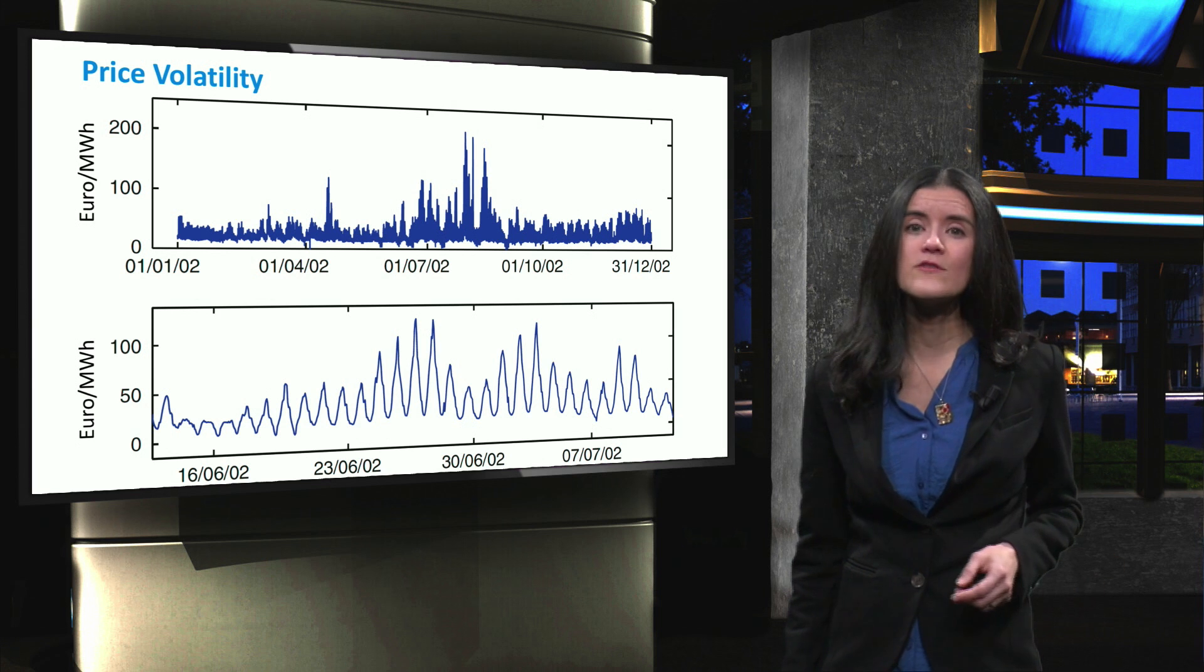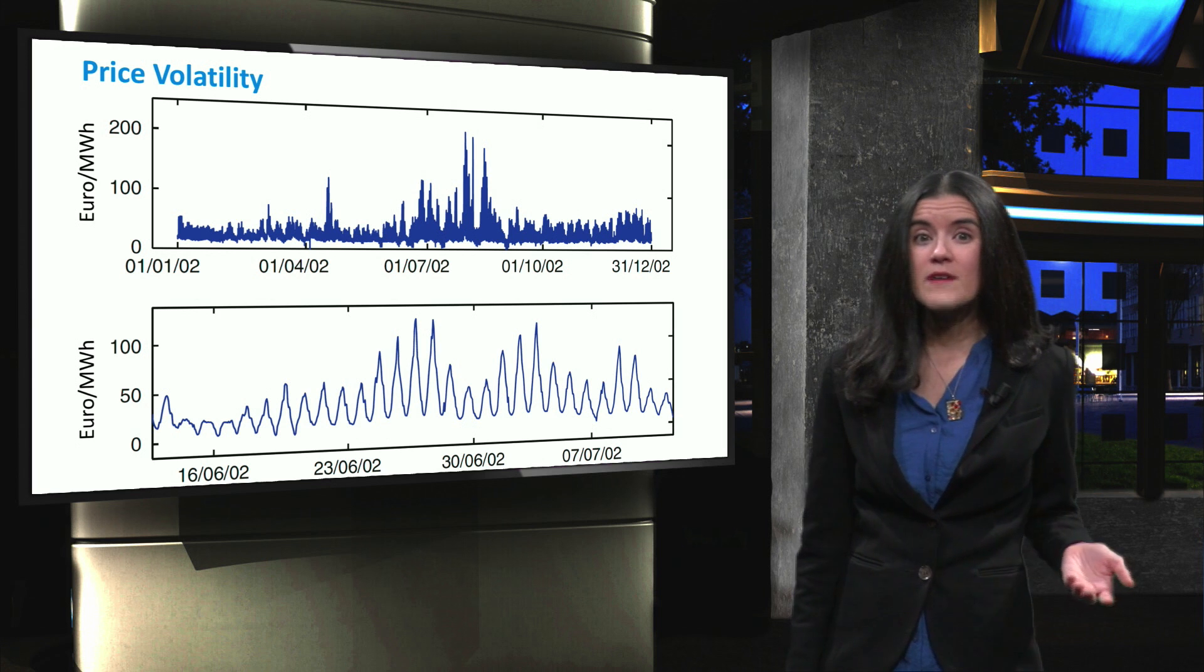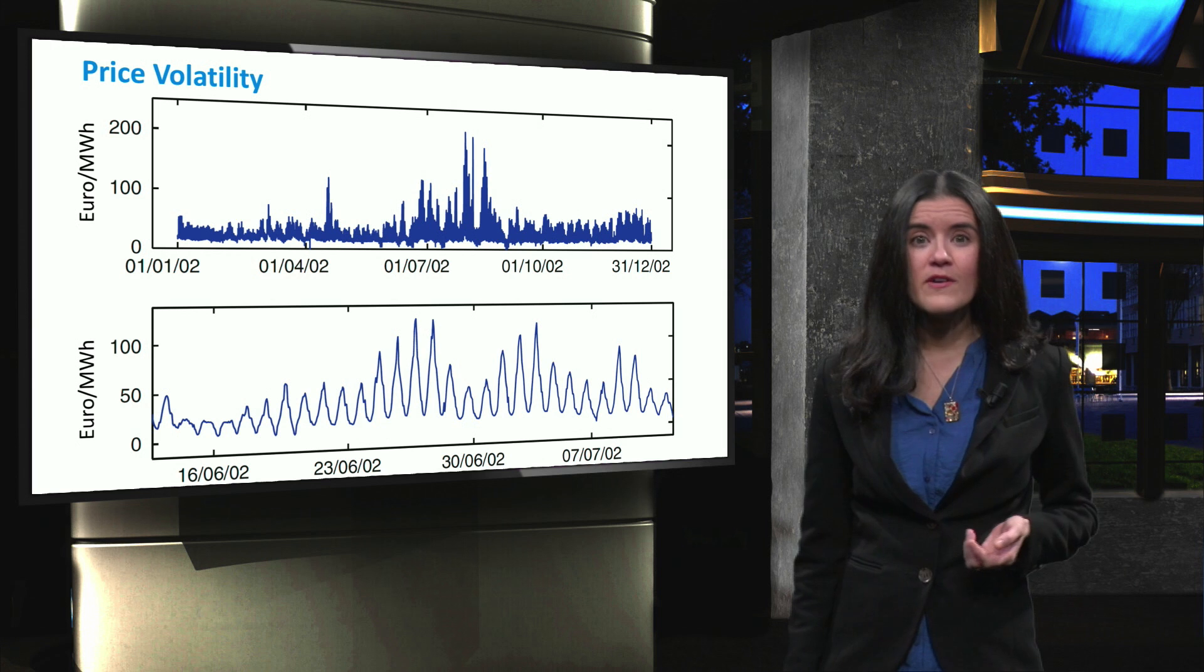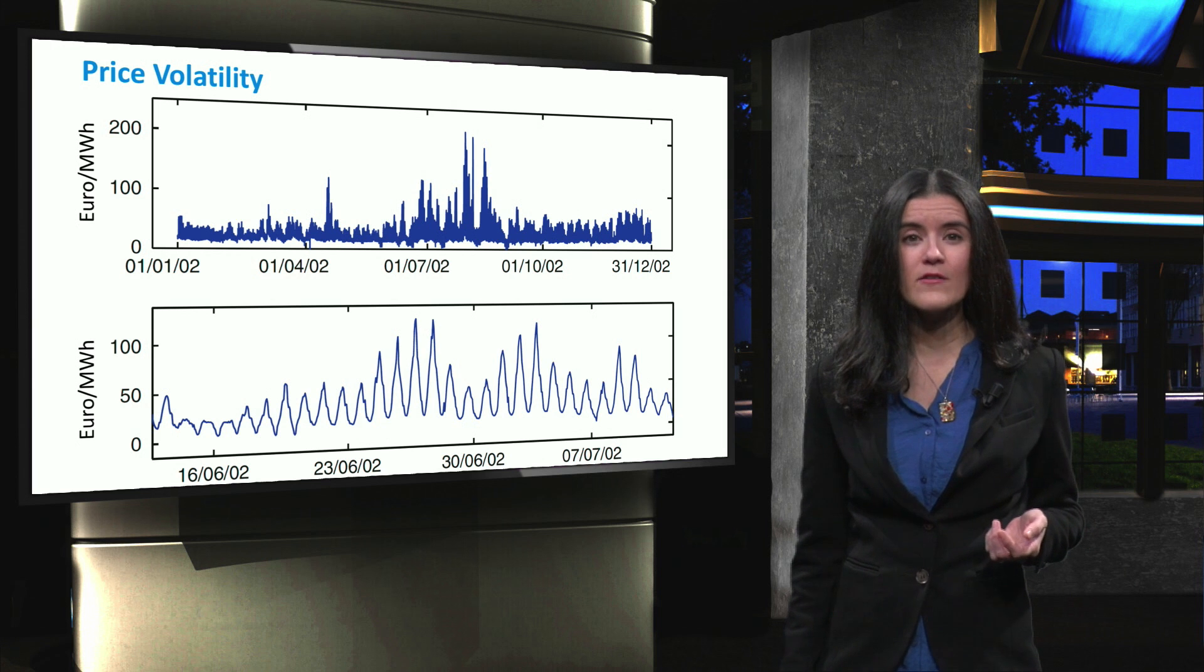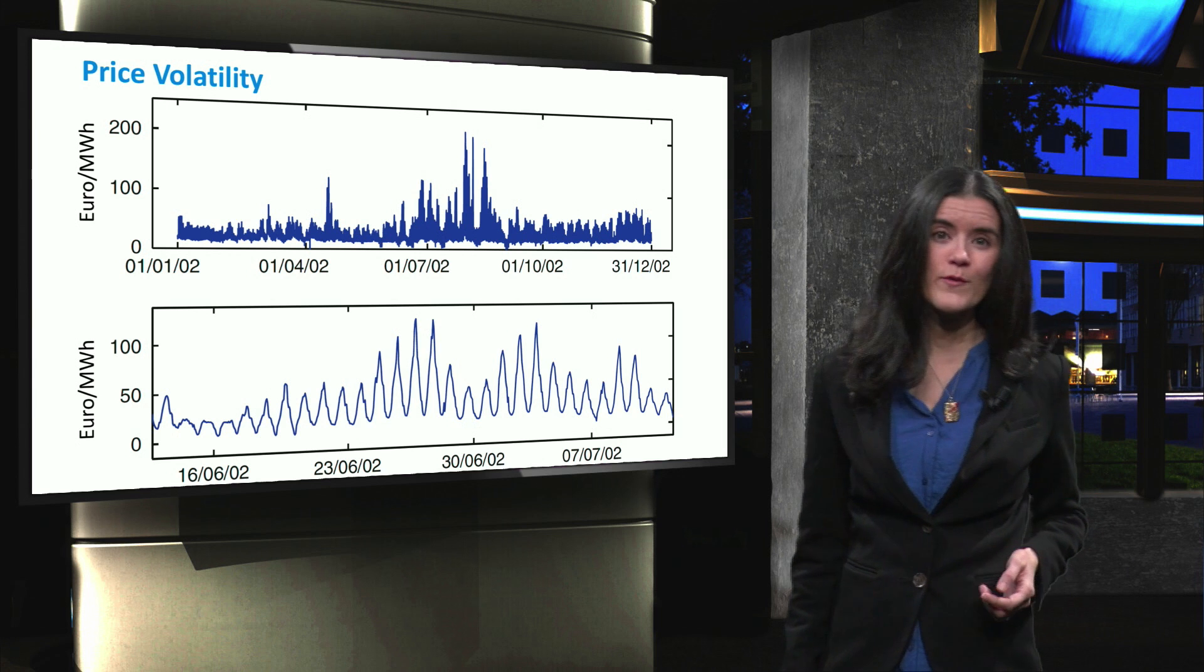Uncertainty in both demand and supply leads to sharp variations in the forecasted price of electricity. On the top side, we can see the yearly price variations in the electricity market in 2008. On the bottom, variations are shown during a period of two weeks.